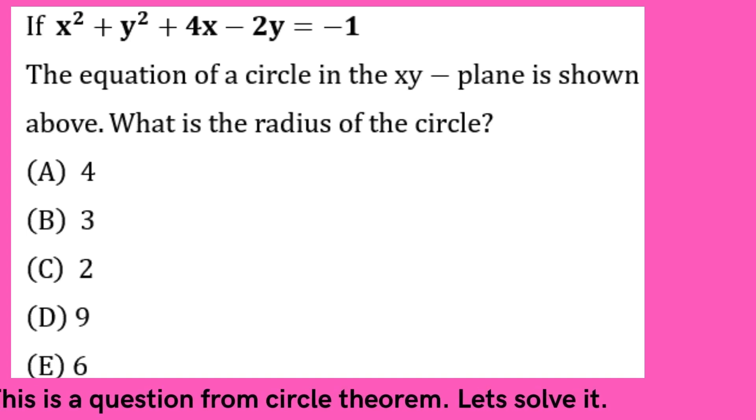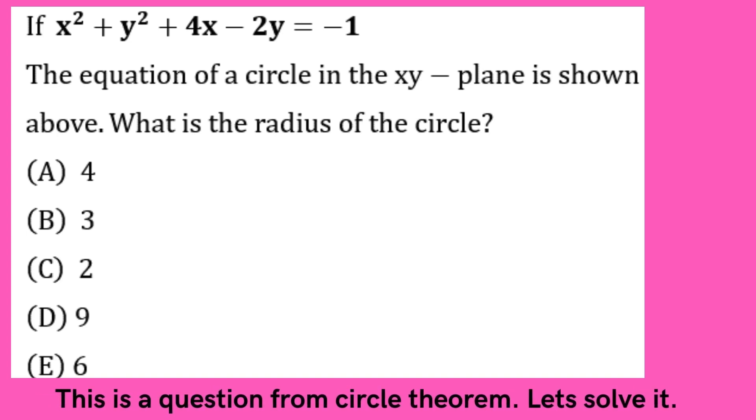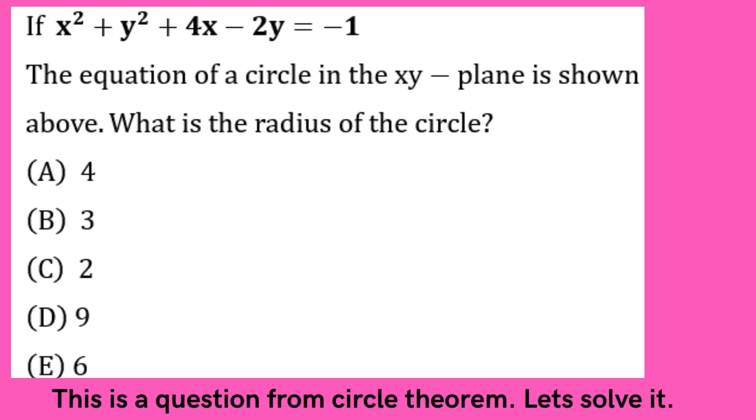If x square plus y square plus 4x minus 2y equals negative 1 is the equation of a circle in the xy plane, what is the radius of the circle?